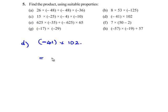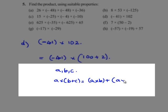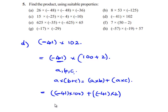We'll see the next problem: negative 41 times 102. This can be written as negative 41 times of (100 plus 2). From the distributive law of multiplication over addition, for any integers a, b, and c: a times (b plus c) gives a times b plus a times c. Here, negative 41 is the common term corresponding to a, and 100 and 2 correspond to b and c. Negative 41 into 100 gives 4100.